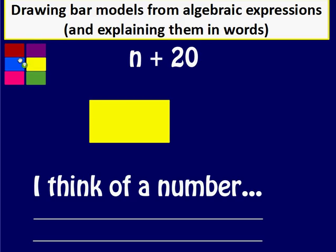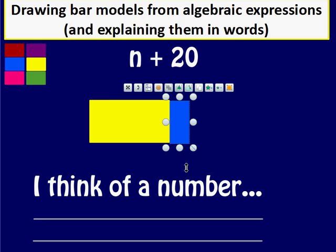And then we add 20. Now we'll go with blue. This is going to be the bit that represents us adding 20. Hopefully you can see that we've got our original number n and we are adding a number onto it.